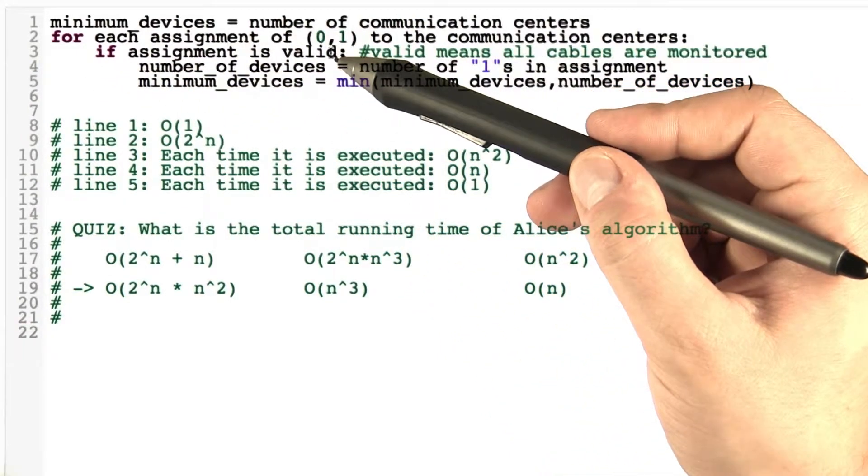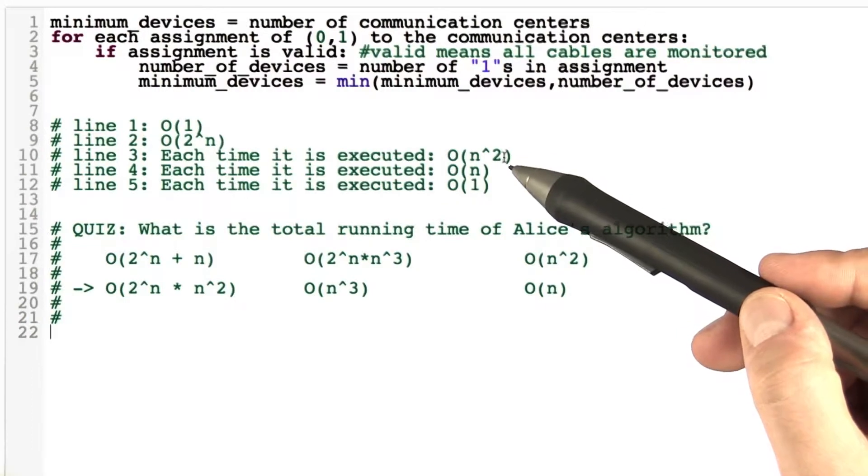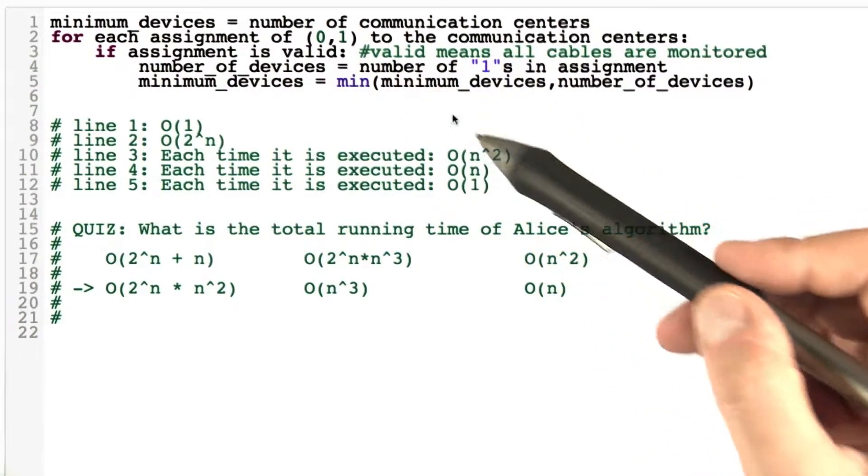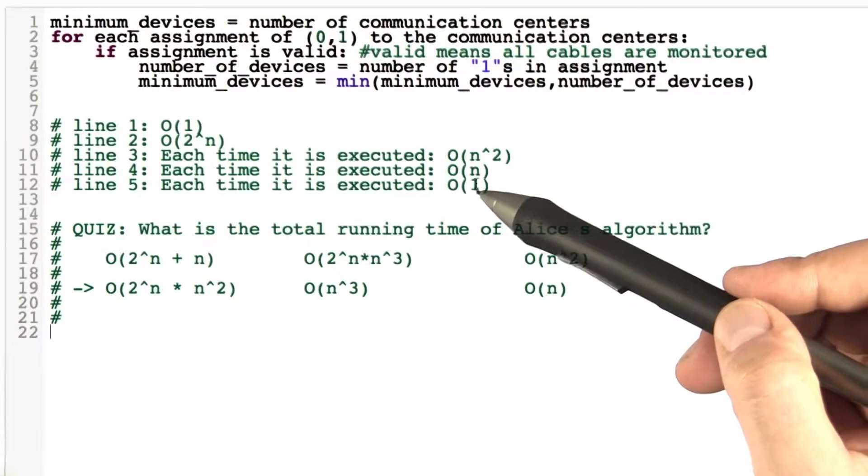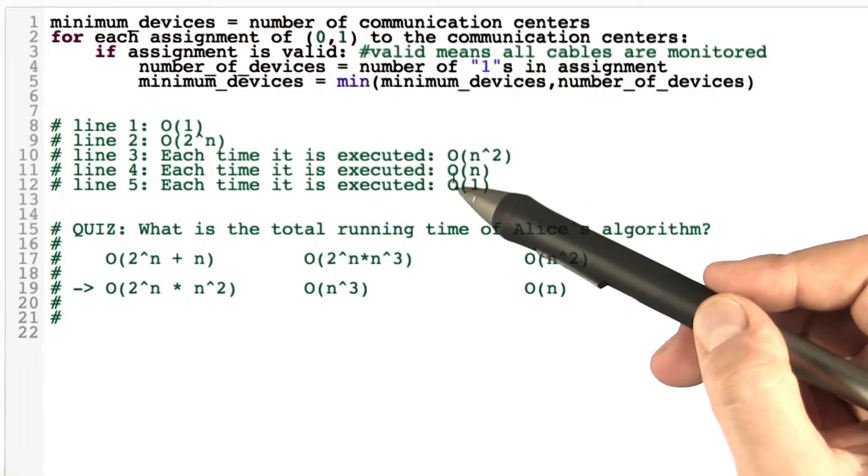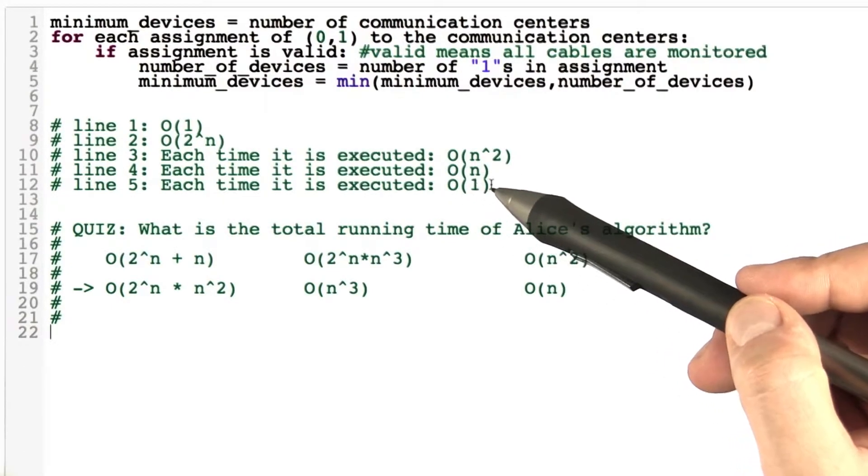So checking if an assignment is valid takes O of n squared times. Then if the assignment is valid, we need an additional O of n plus O of 1, so an additional O of n time, because this here is constant, so we can ignore it.